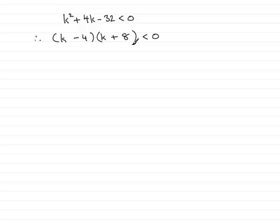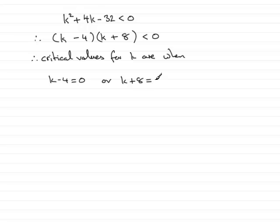Now what we need to do is find the critical values for k, that's the values of k that would make this equal zero. So the critical values for k are when that bracket, k minus 4, equals zero, or when the other bracket equals zero, so that's k plus 8 equals zero.